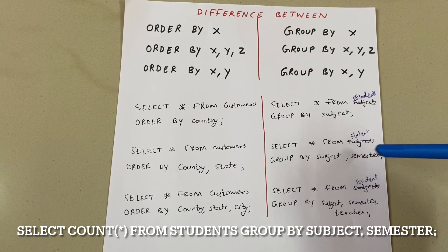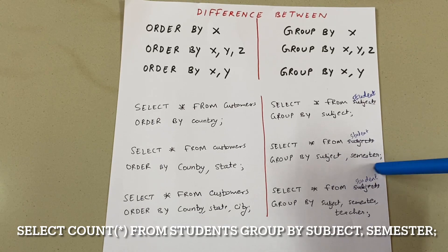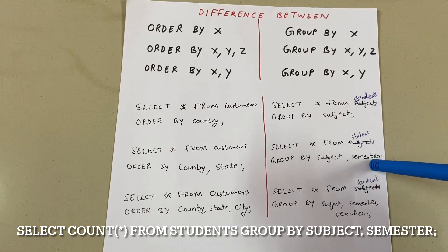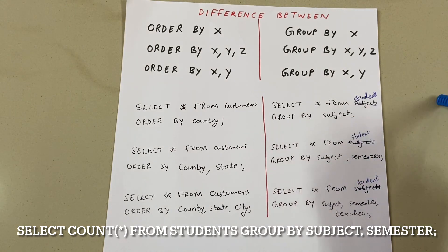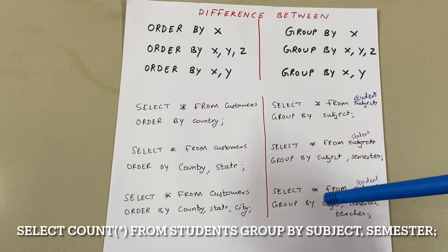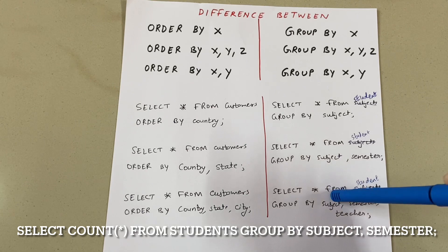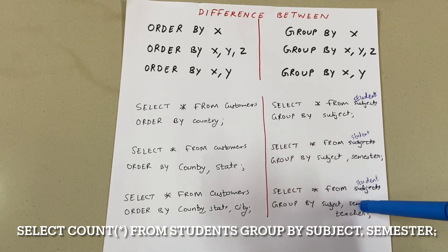If you write GROUP BY subject, semester, this means all the students that have the same subject and the same semester will be in one group. Similarly, GROUP BY subject, semester, teacher means all the students with the same subject, same semester, and same teacher will be in one group.